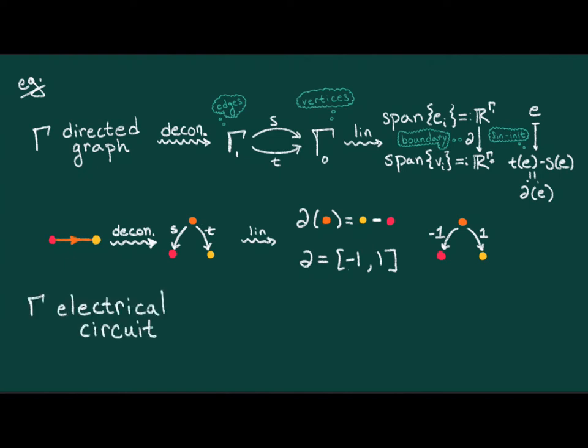For example, we can think of gamma as an electrical circuit. In this case, a vector I in R^(gamma_1) is a labeling of the wires by numbers, which we can imagine to be describing the current through that wire in some chosen units. Moreover, since we've articulated these ingredients as linear things, we can use them to write down linear equations.